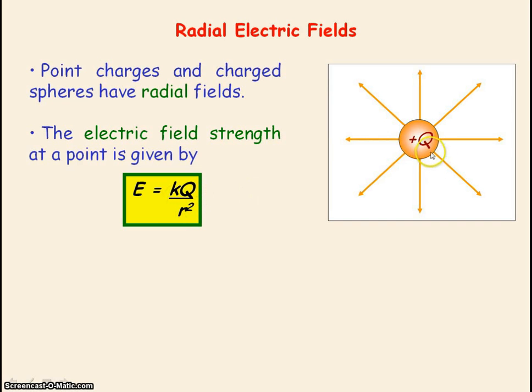Q is the charge of our object and r is the distance from the center of the object to point P. You can see that the electric field strength obeys an inverse square law with distance.